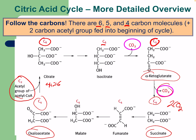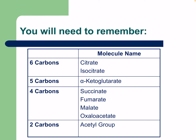To summarize the carbon counts: six-carbon molecules include citrate and isocitrate; five-carbon molecules include alpha-ketoglutarate; four-carbon molecules include succinate, fumarate, malate, and oxaloacetate; and the two-carbon molecule is the acetyl group.